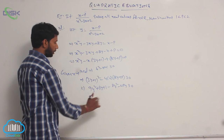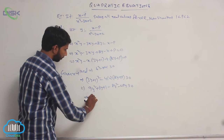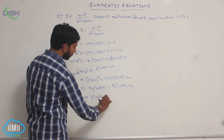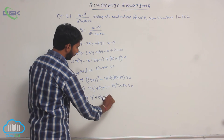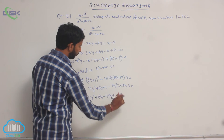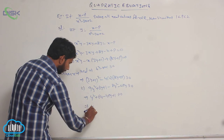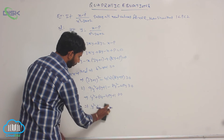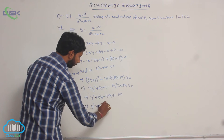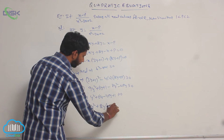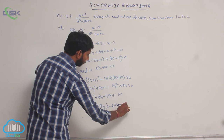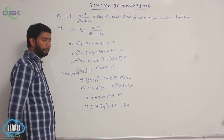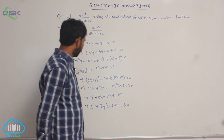Combining like terms: 9y squared minus 8y squared gives y squared, and 6y minus 4py gives y(6 minus 4p). So we get: y squared plus y(6 minus 4p) plus 1 greater than or equal to 0, which is y squared plus 2y(3 minus 2p) plus 1 greater than or equal to 0.